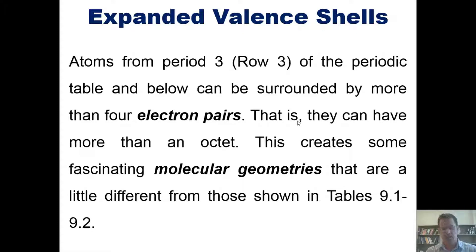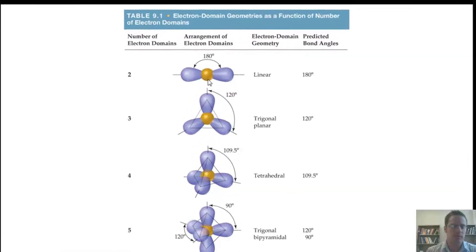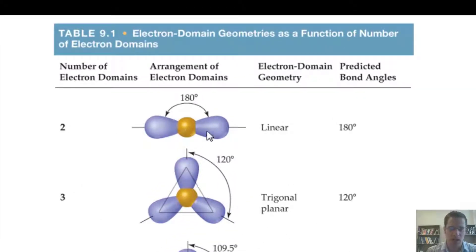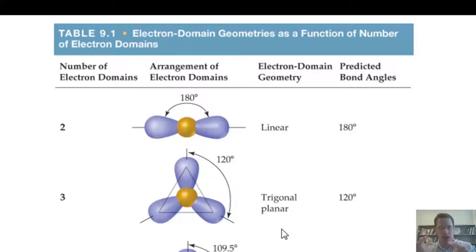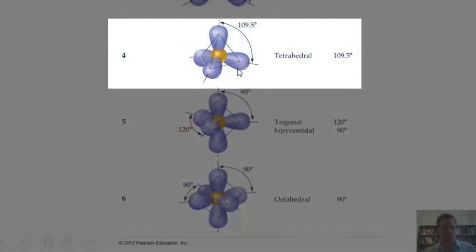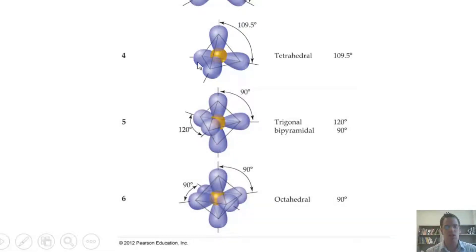Here's Table 9.1. If a central atom is bonded to only two things, VSEPR theory places them as far apart as possible, giving a linear geometry with a 180° bond angle. With three things around it, the bond angle is 120° in a trigonal planar arrangement. With four things, they spread out 109.5° apart, giving us tetrahedral geometry.